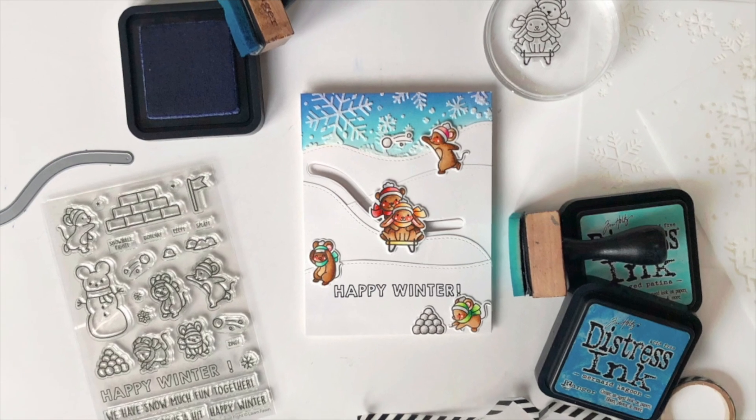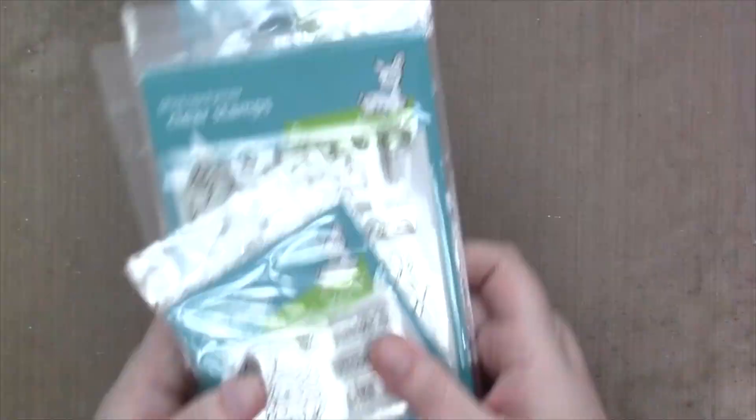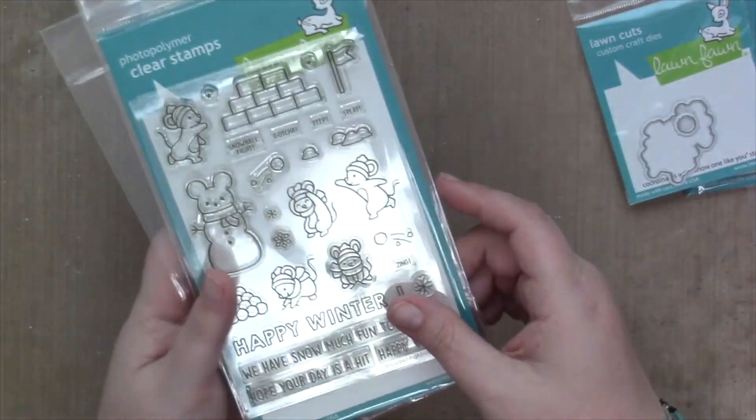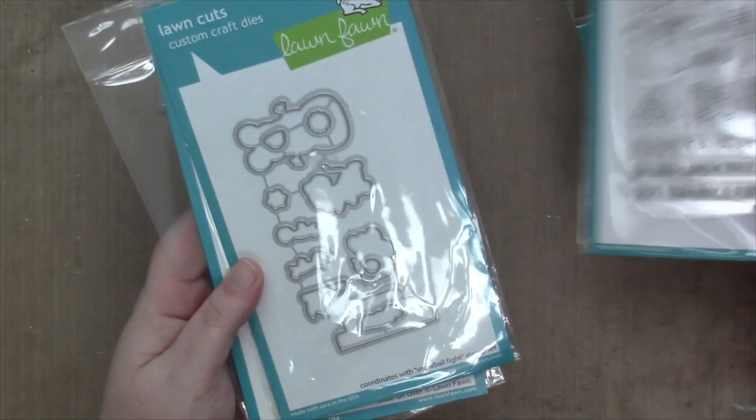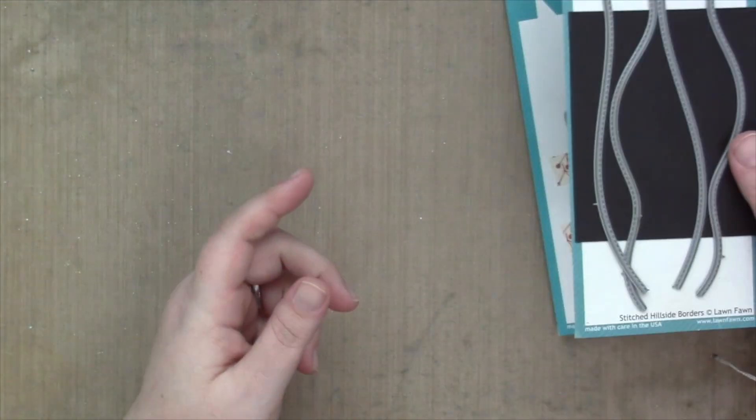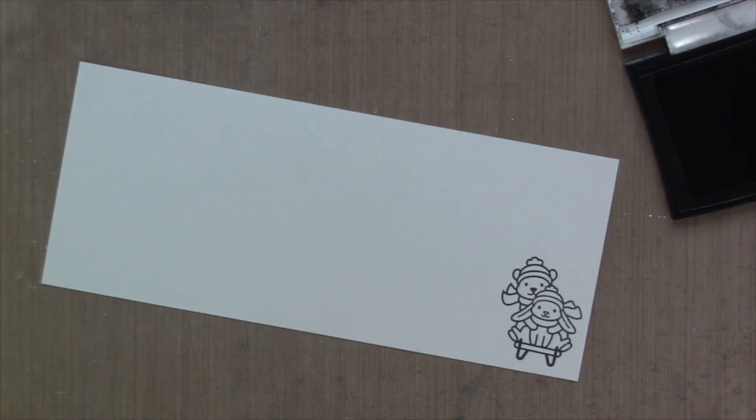Hi guys, it's Sam and I'm back with another video for Lawn Fawn. Today I'm going to create an interactive card with the new Snow One Like You Stamps and Dies, Snowball Fight Stamps and Dies, Slide On Over, and Stitched Hillside Dies. I'm also going to use the Snowflake Background Stencil Set.